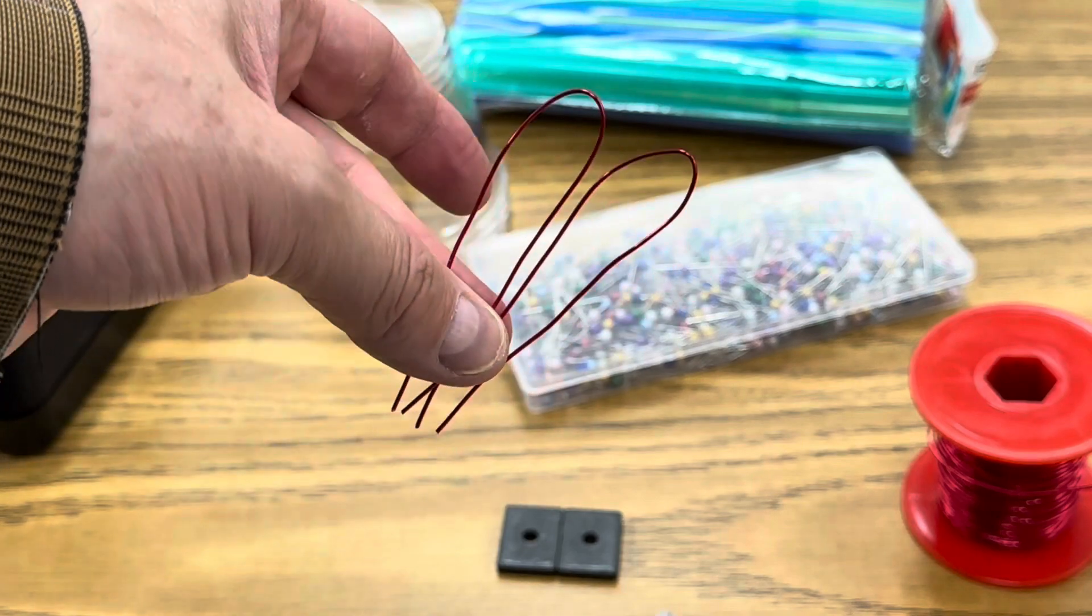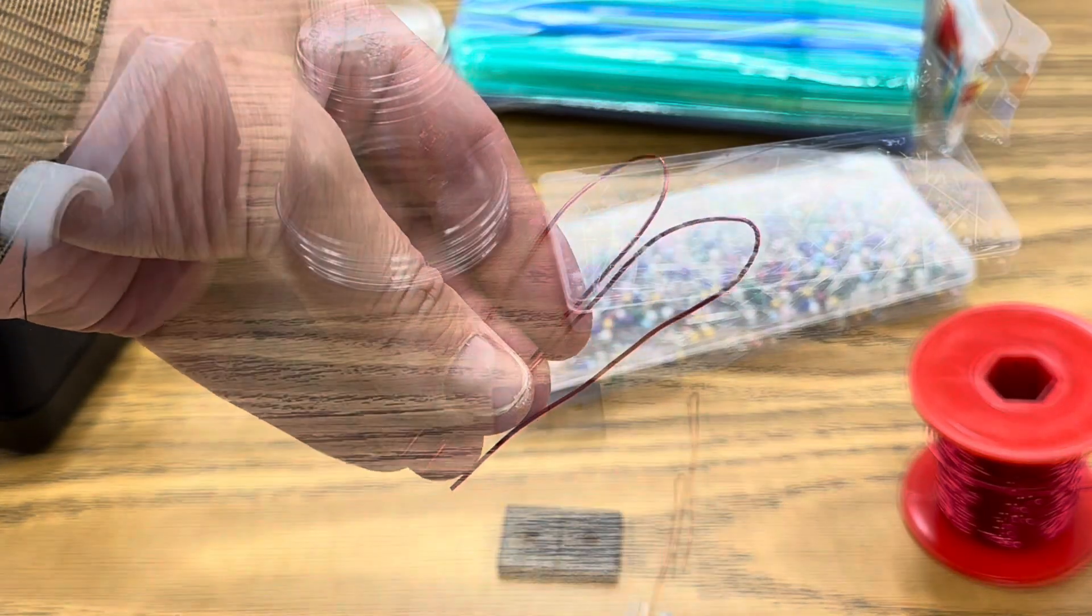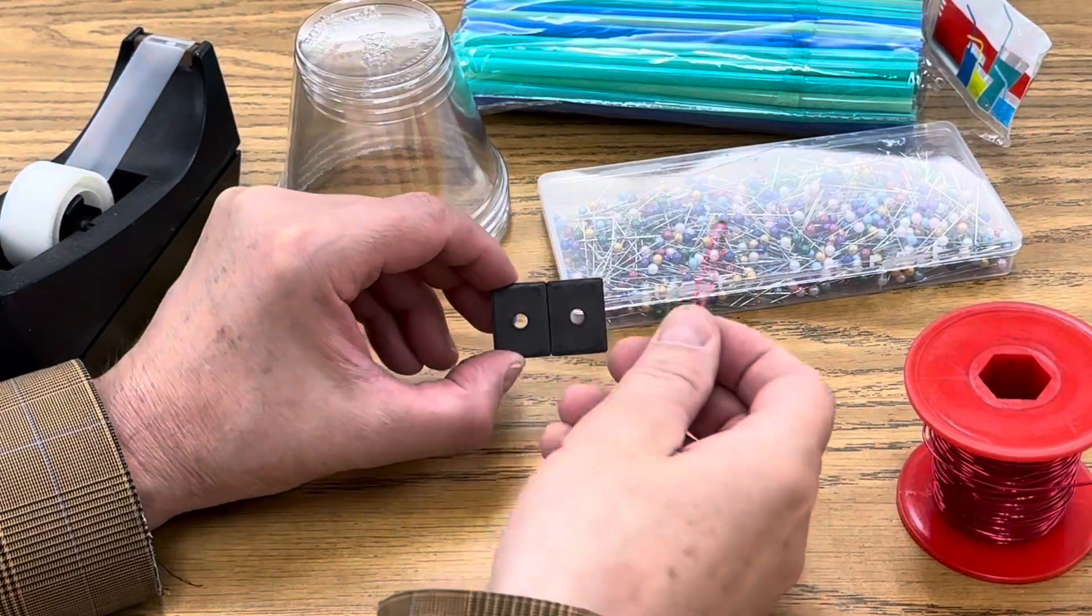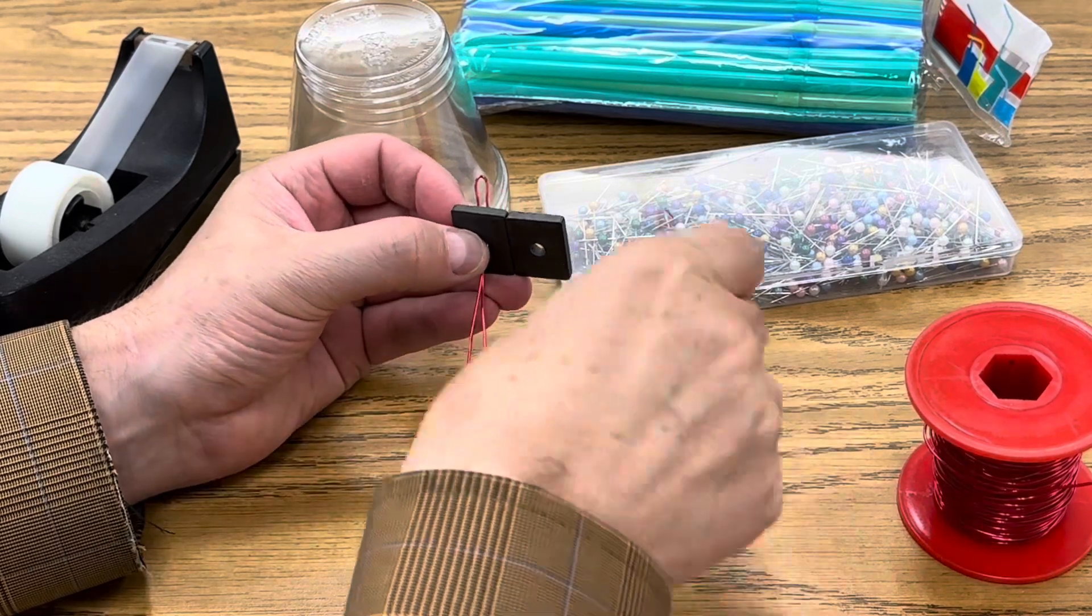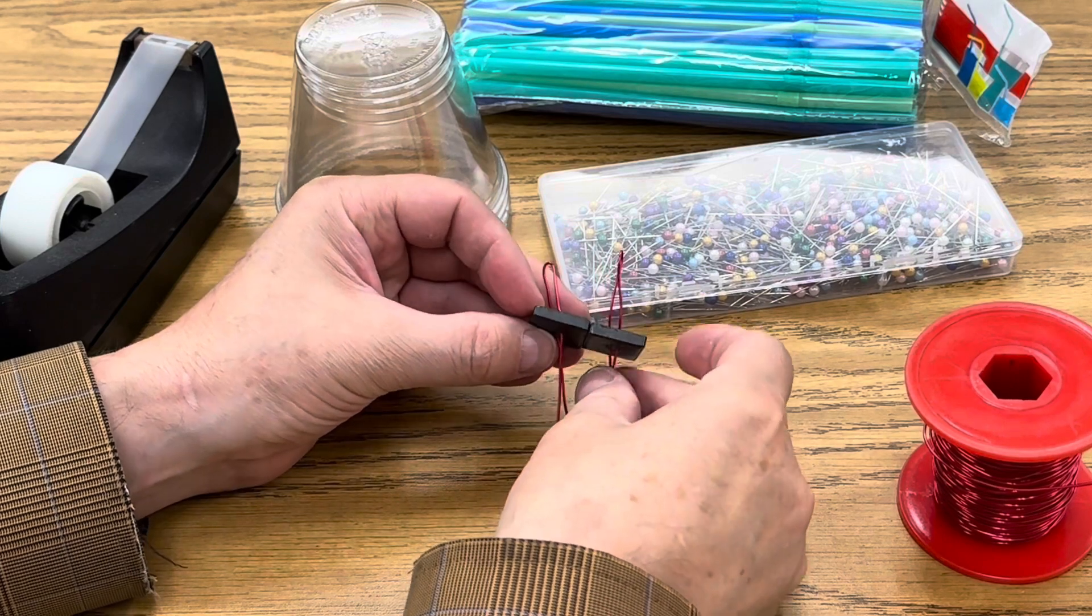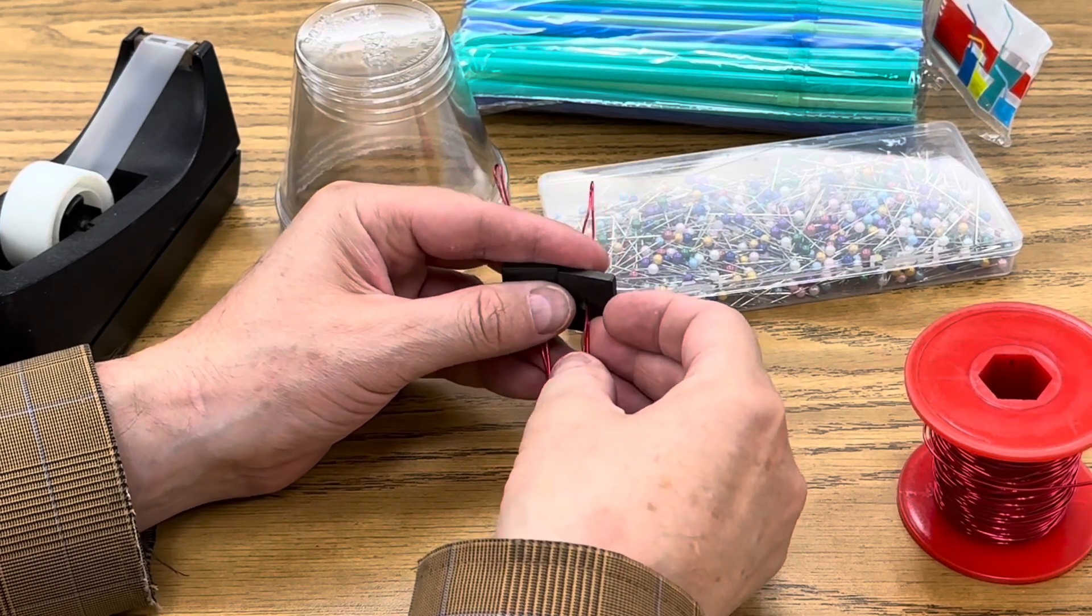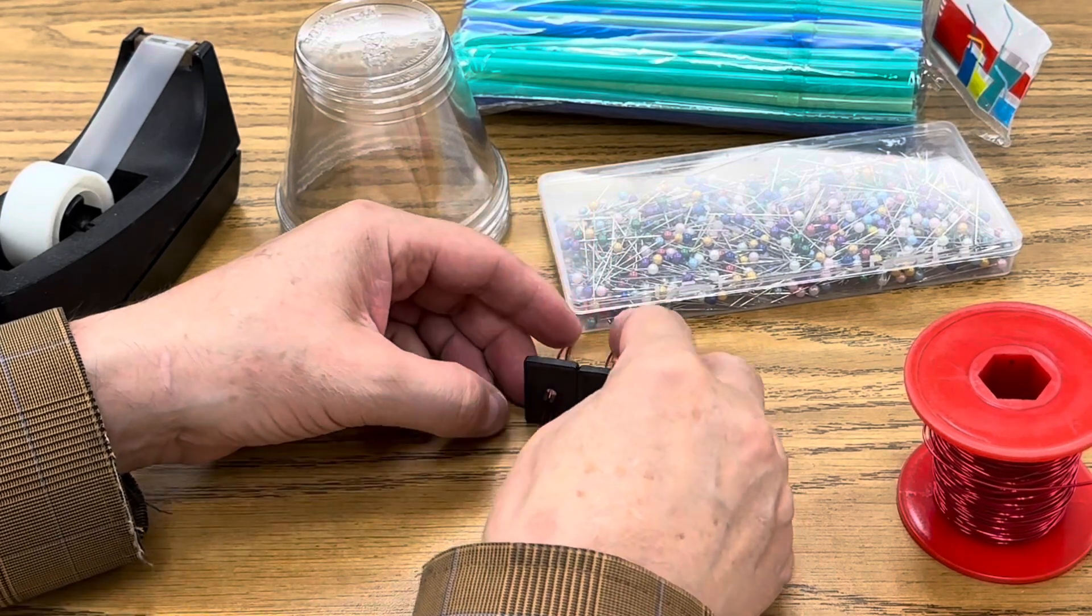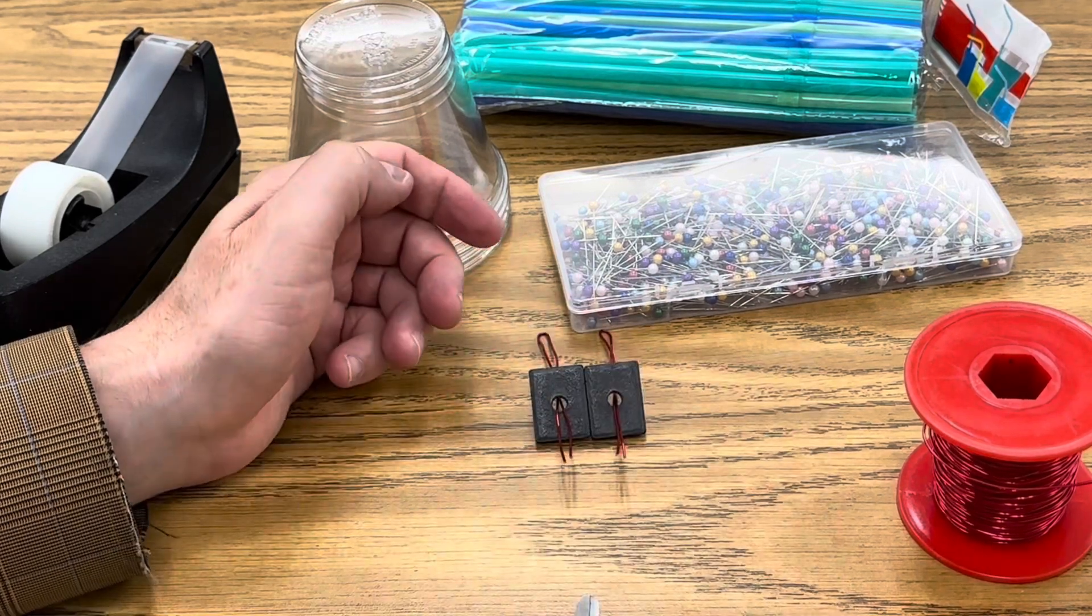The second step is to cut two strips of wire that are the same length and fold them in half. Now while both magnets are aligned, take your wires and thread them through so the bended part is on the same side of both magnets. Thread it through so that there's just a little bit of wire hanging out both ends of the magnet that you can bend.